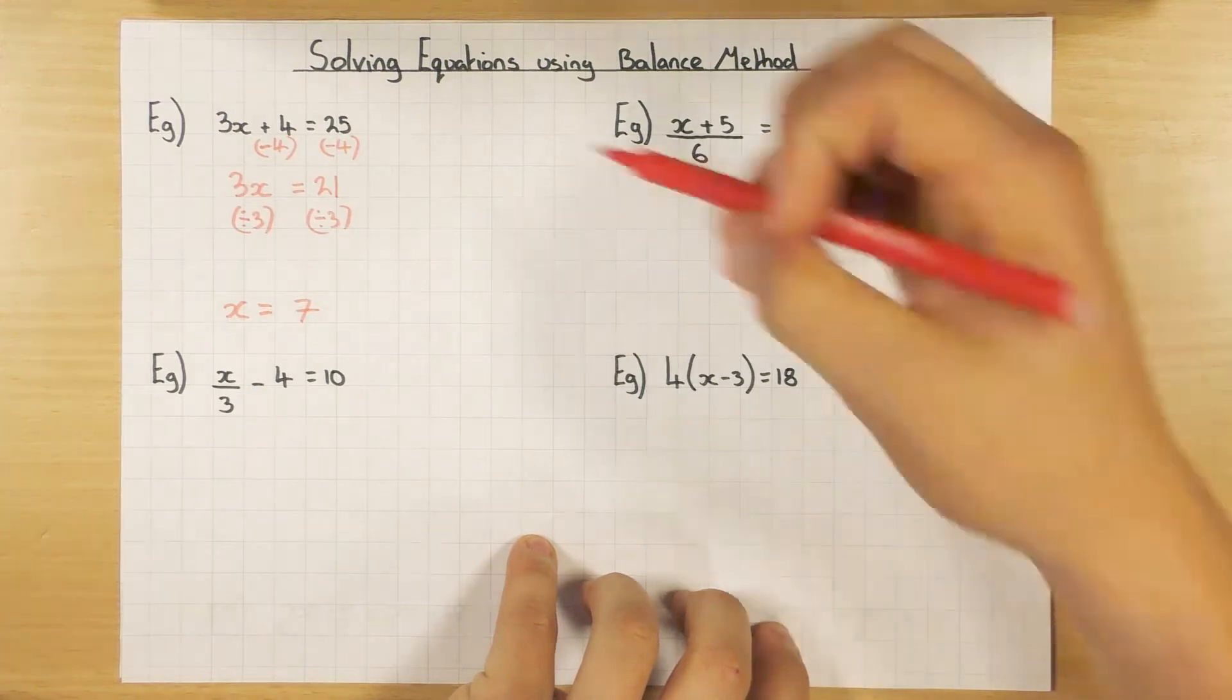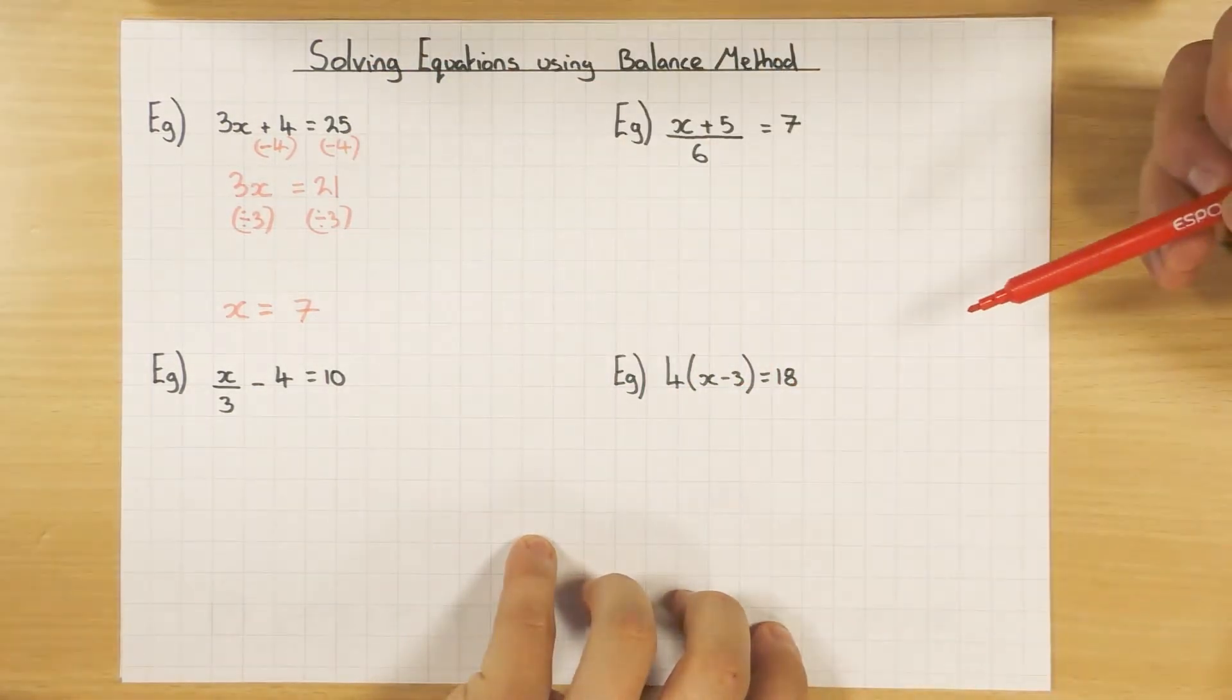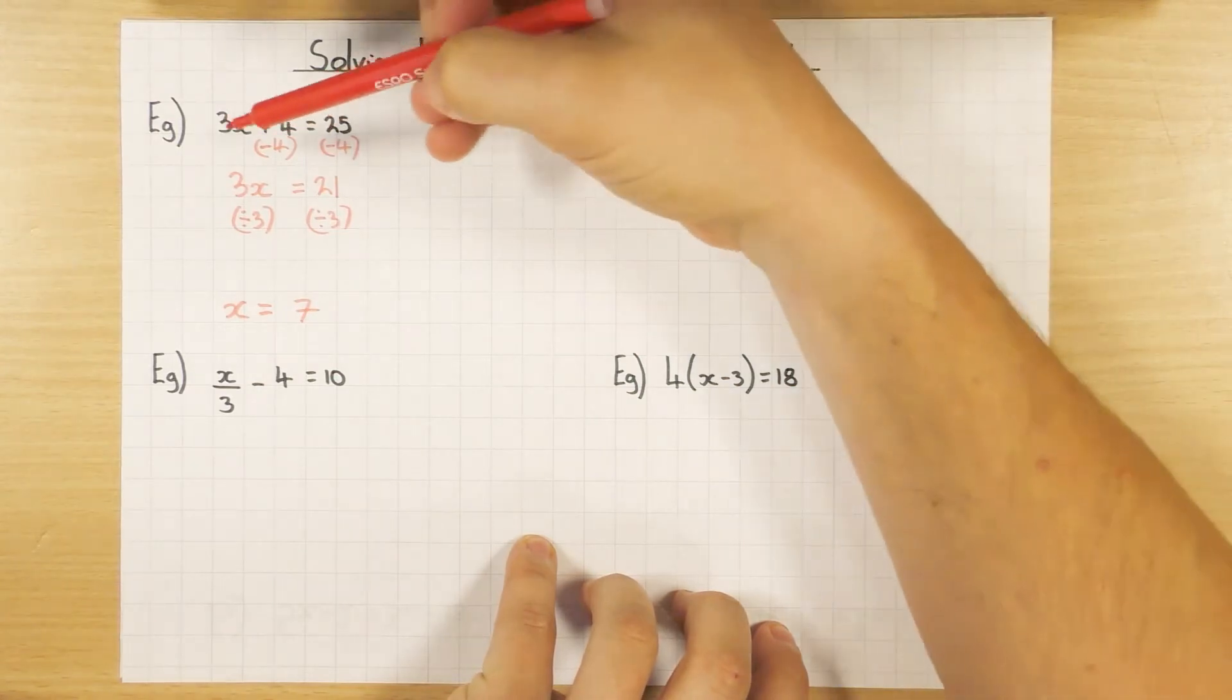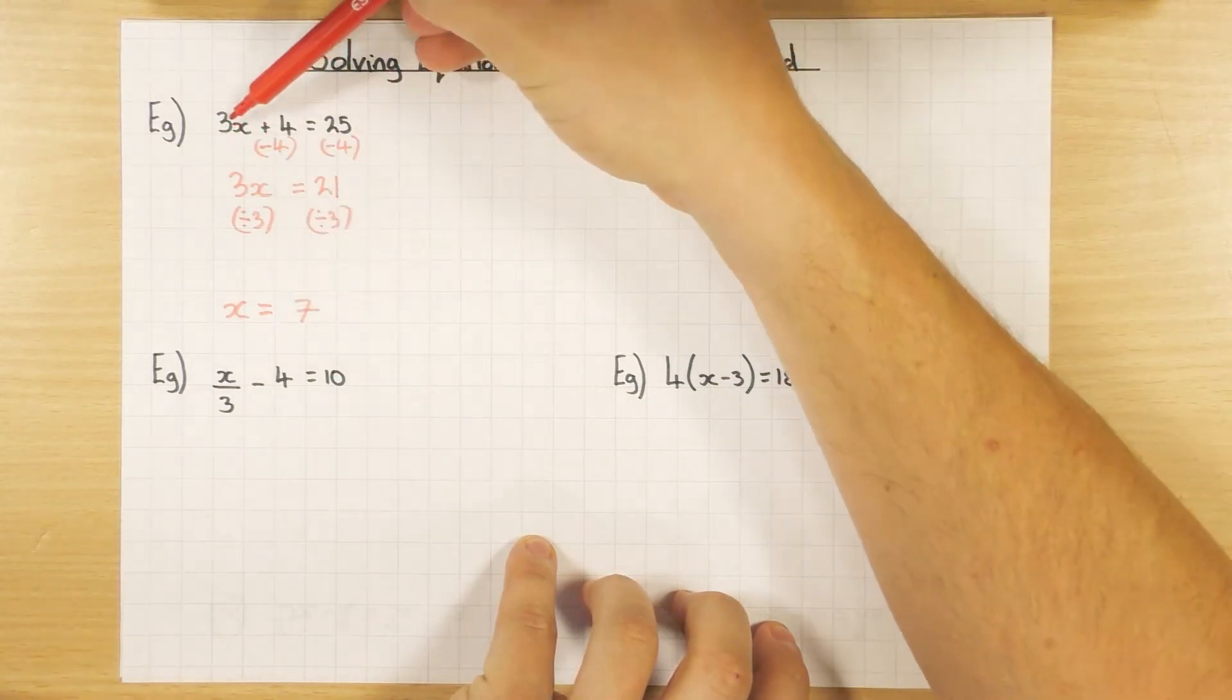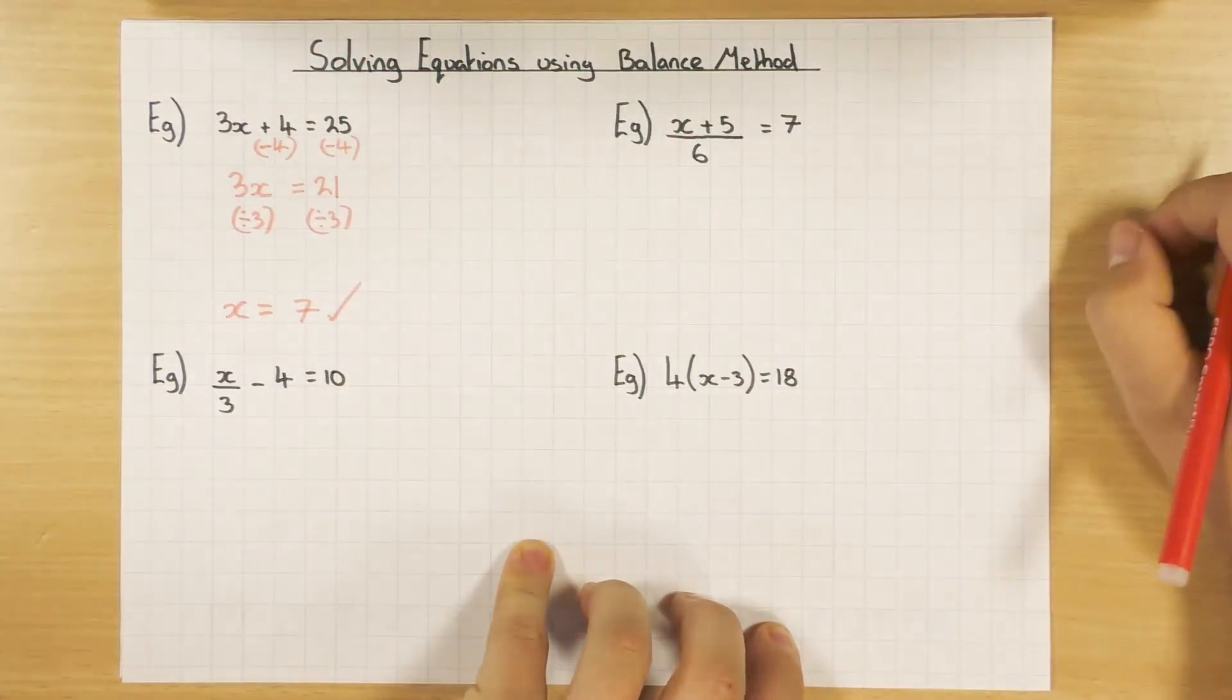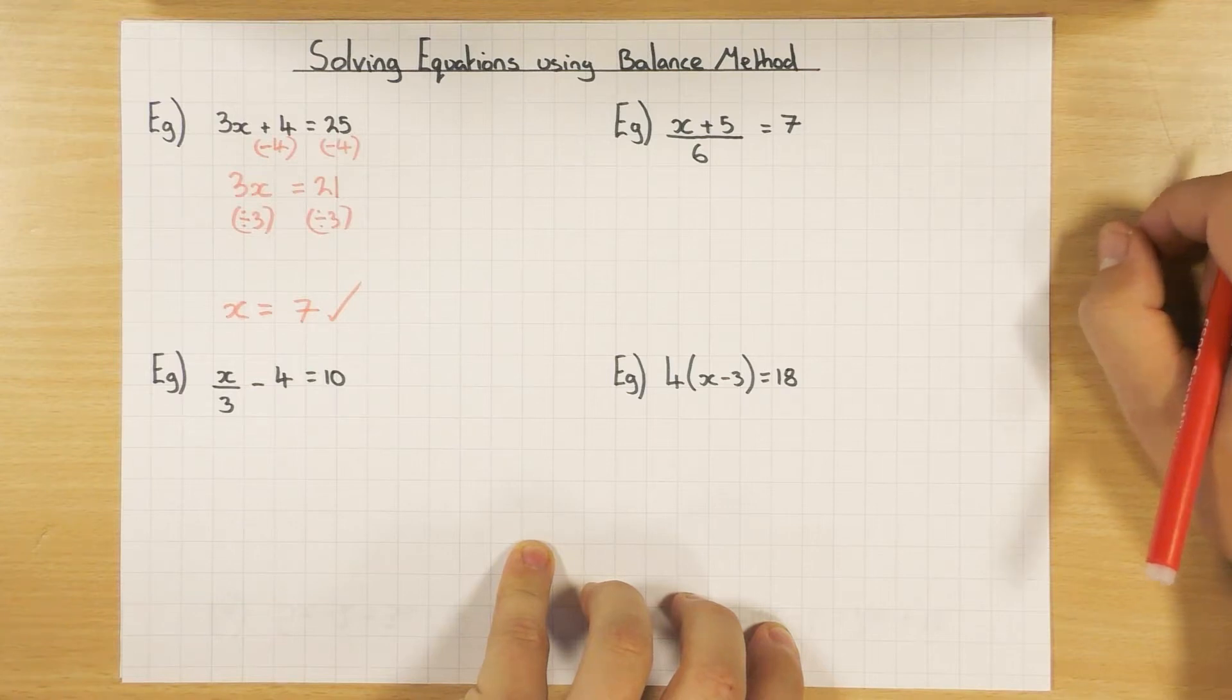So 3x divided by 3 is obviously x. 21 divided by 3 is obviously 7. That's my answer. Don't forget to check it. These are questions here, you should be so thankful when they come up in the exam, because you can leave it knowing you've got it right. So all we do is test it. We put 7 back into here. 3 times 7 is 21, plus 4 is 25. Happy days. You can rest assured that you have those marks safe and secure.